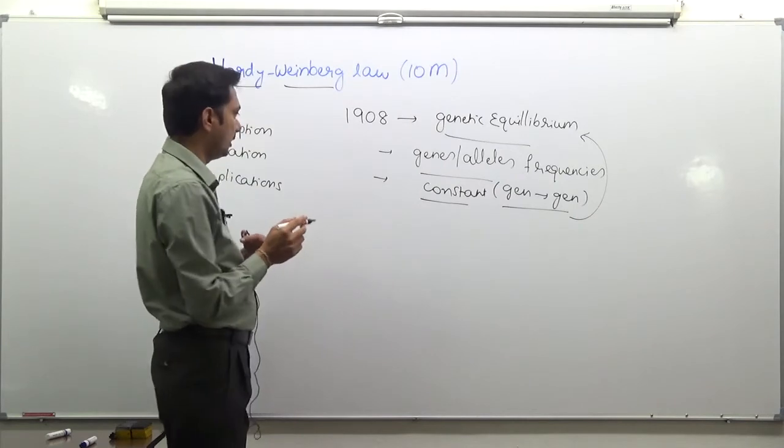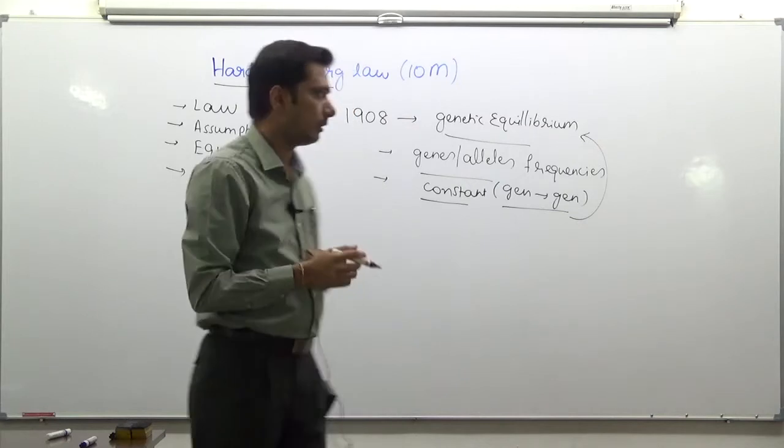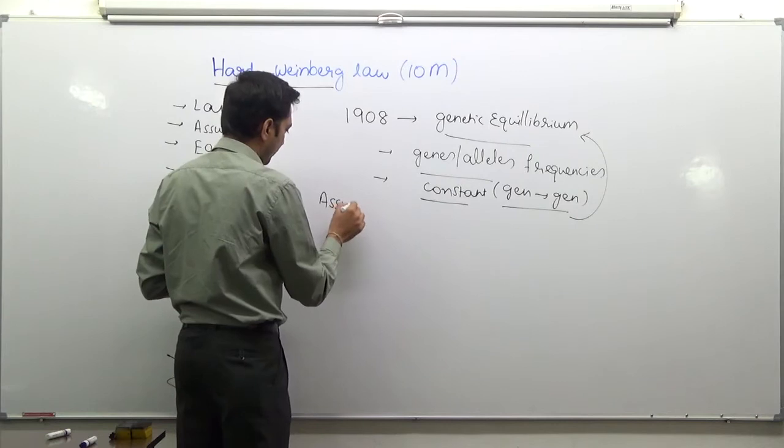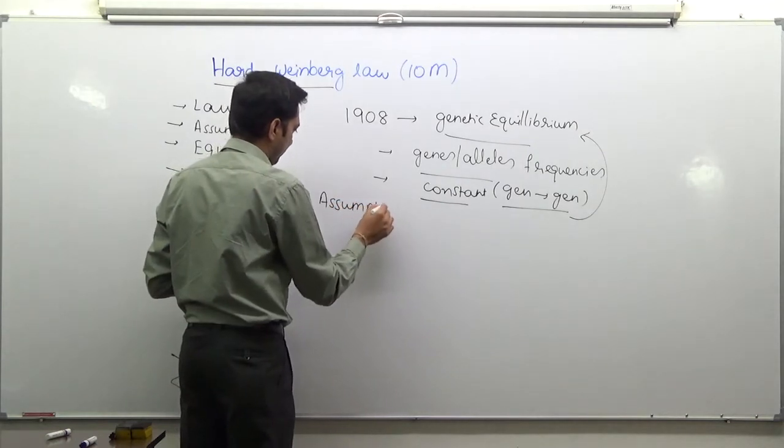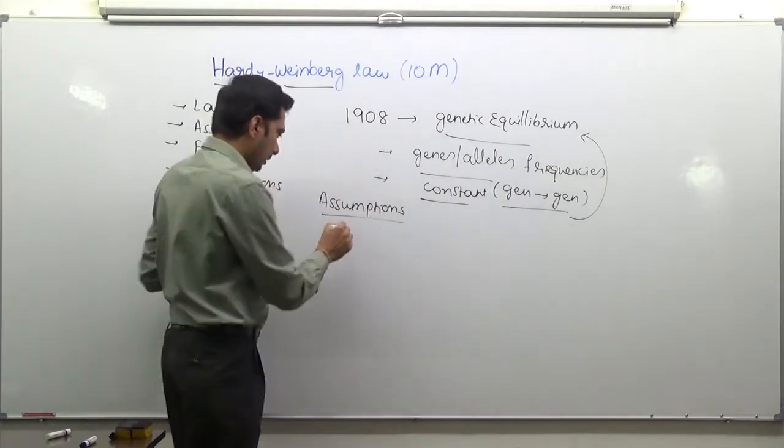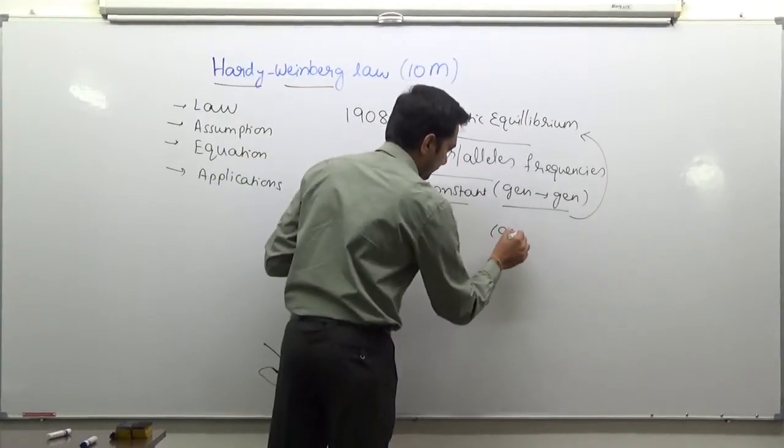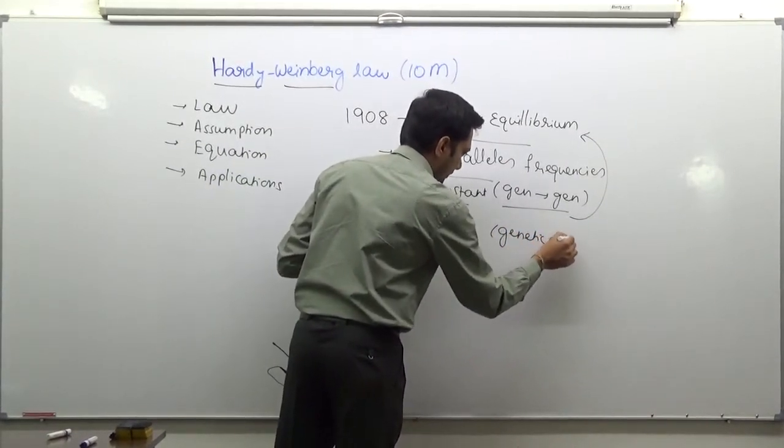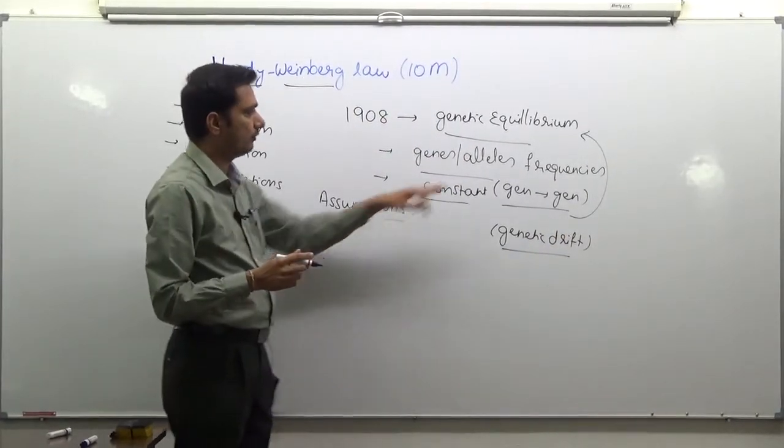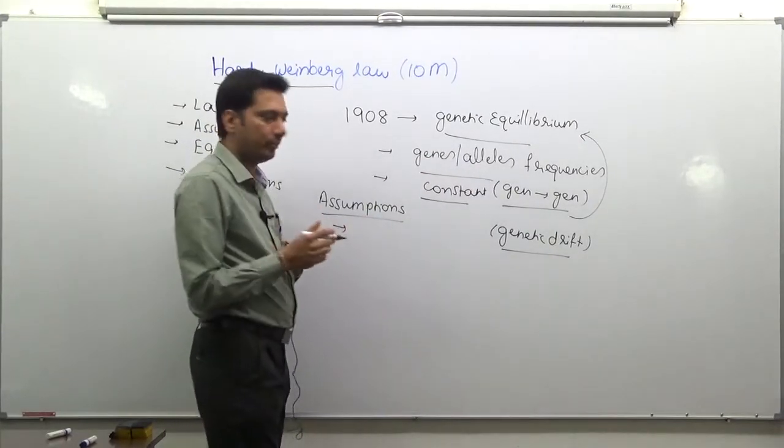This is exactly what this law talks about. But it only operates under certain assumptions. What are those assumptions? You probably heard about something called genetic drift. This is random chance of losing or changing the frequencies over time, which normally happens in a small population.